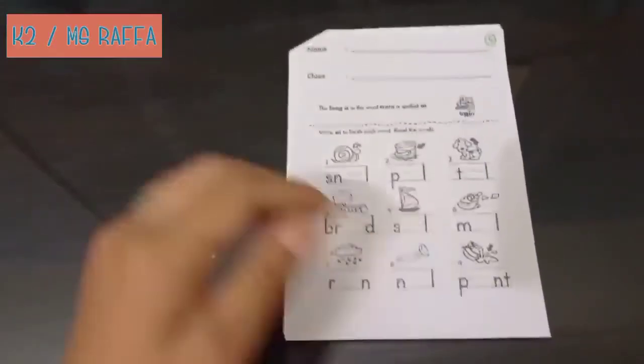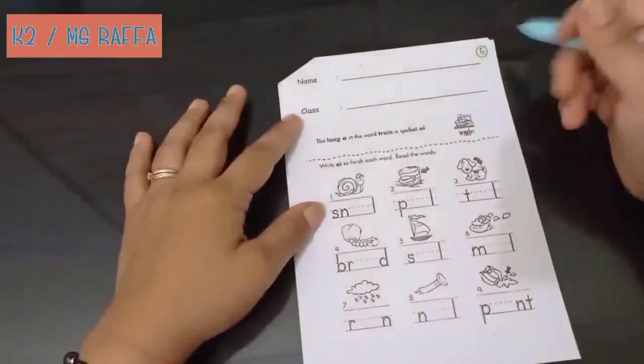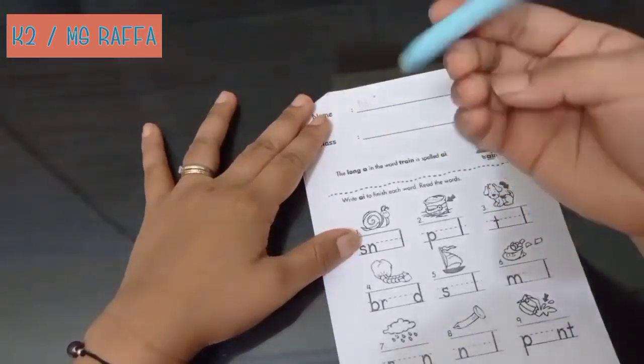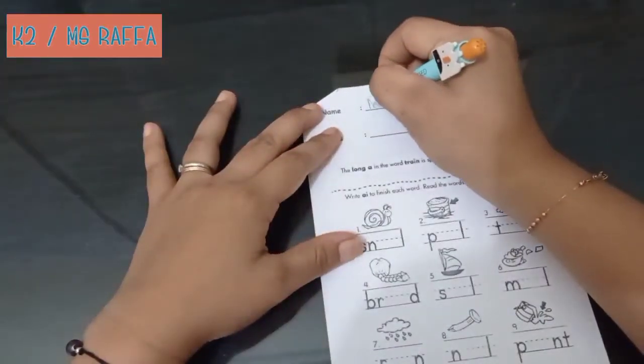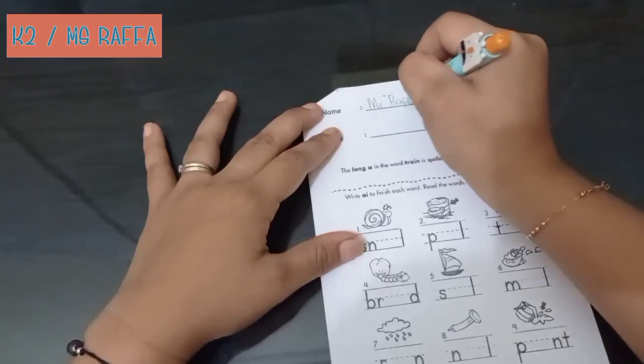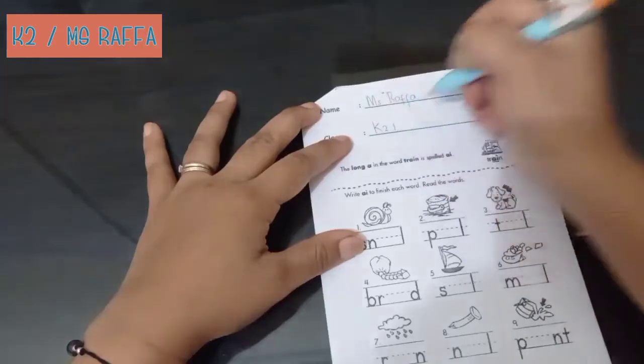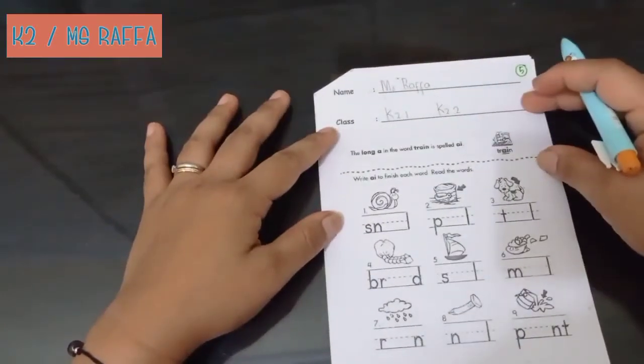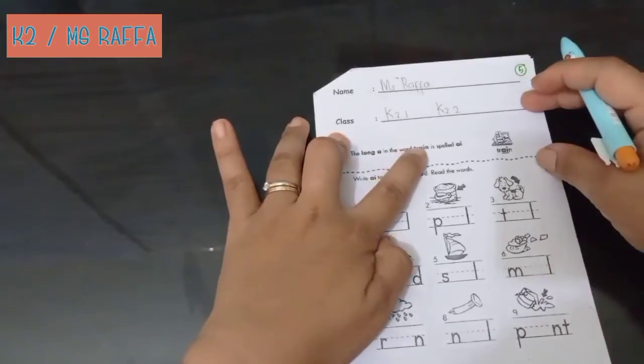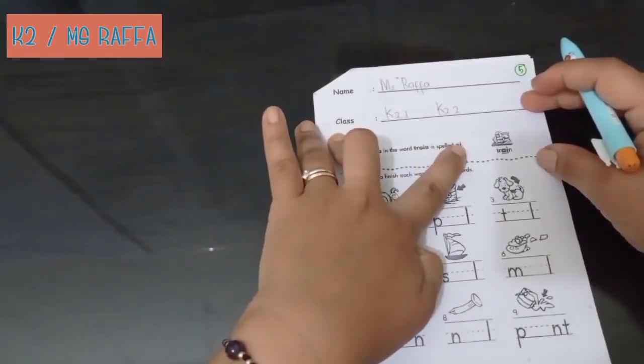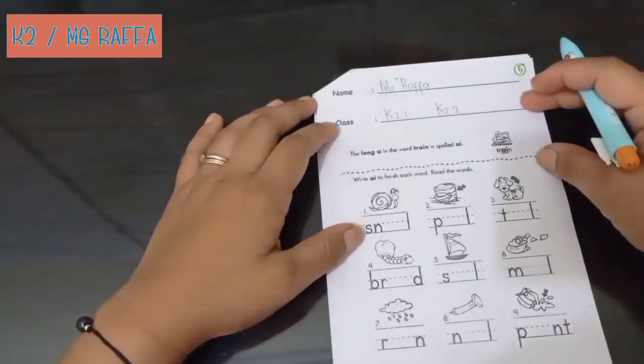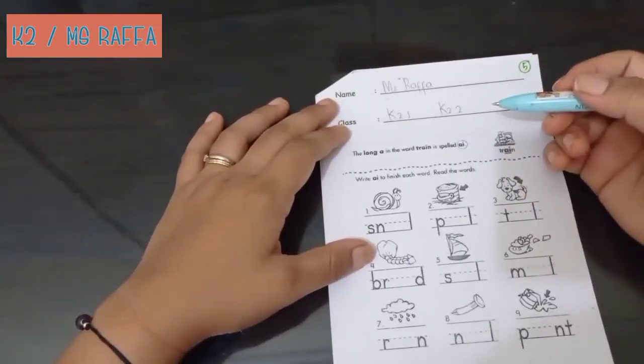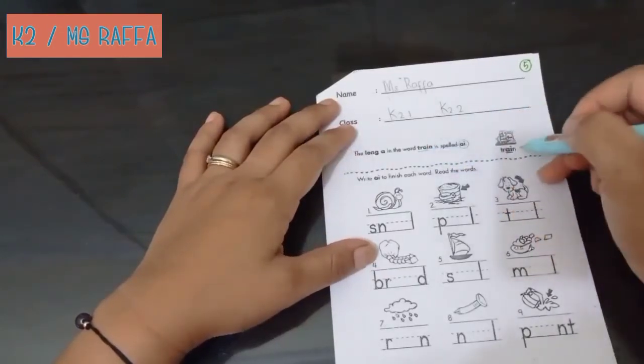Hi. Welcome back again K2. Today let's do our worksheet number five. But before that, don't forget to write your name in here. And then your class. K2.1 for B1 or K2.2 for B2. Okay. Today we will learn about the long A in the word train, spelled A-I. Train. Train. It's spelled AI. This one. AI. Train. Long A. Train.